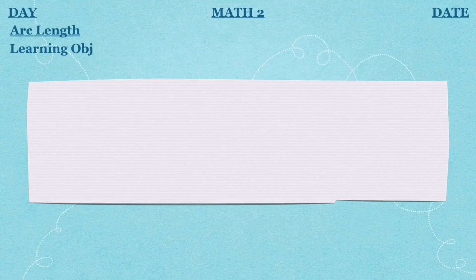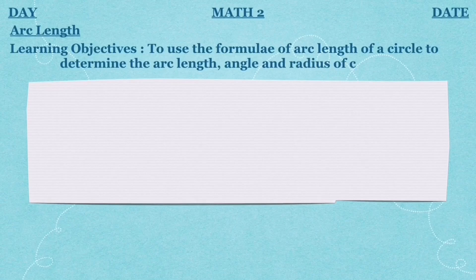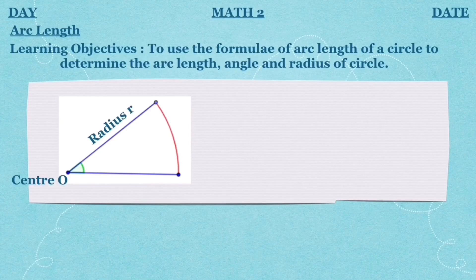Our learning objectives for today are to use the formula of arc length of a circle to determine the arc length, angle, and radius of a circle. This is the diagram for it. You have the center O and the radius labeled r. This line is also radius. The outer part, the red color, is called the arc length.